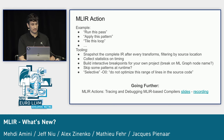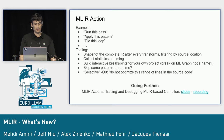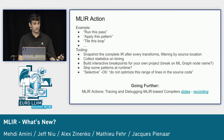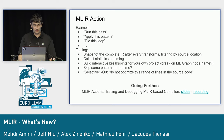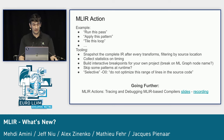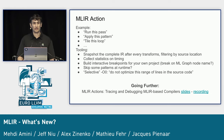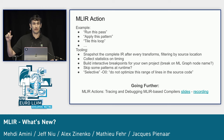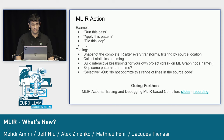Actions are very recent — landed last month — and we have yet to build all the tooling around them, but the possibilities are exciting. For example, you could build an '-O0 per range' for Flang: compile your project but don't optimize a specific range of the source code. This is possible with actions.